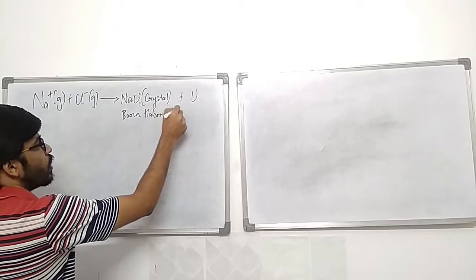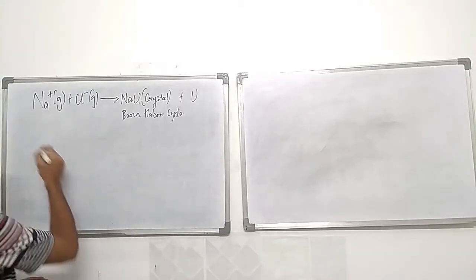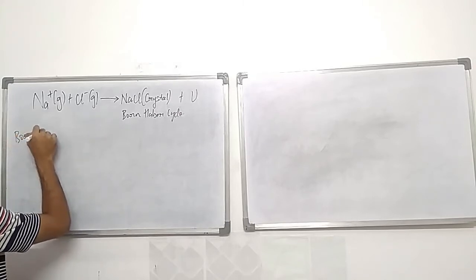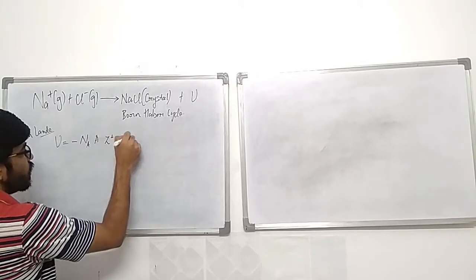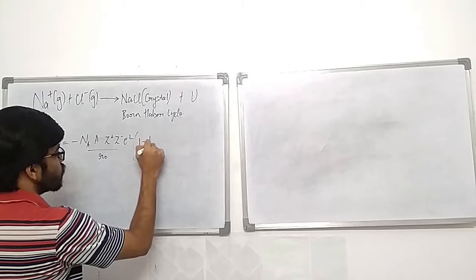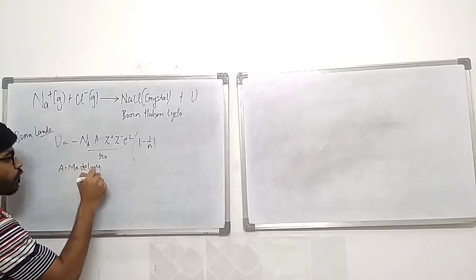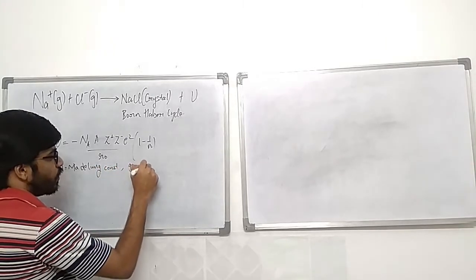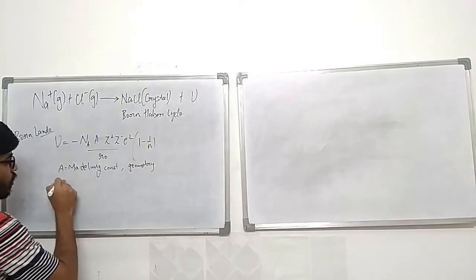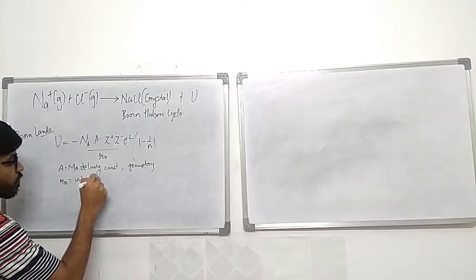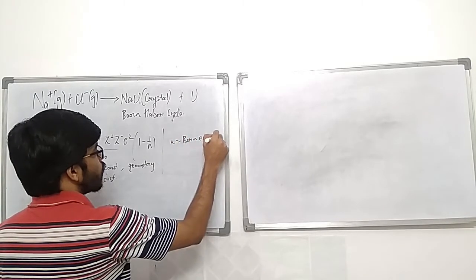In the Born-Haber cycle, all other quantities are known and lattice energy is the remaining quantity to be calculated. A mathematical expression is given by the Born-Landé equation: U = −N_A × A × Z⁺Z⁻e² / R₀ × (1 − 1/n), where A is the Madelung constant depending on geometry, Z⁺ and Z⁻ are charges on cation and anion, e is the electron charge, R₀ is the interionic distance, and n is the Born exponent.